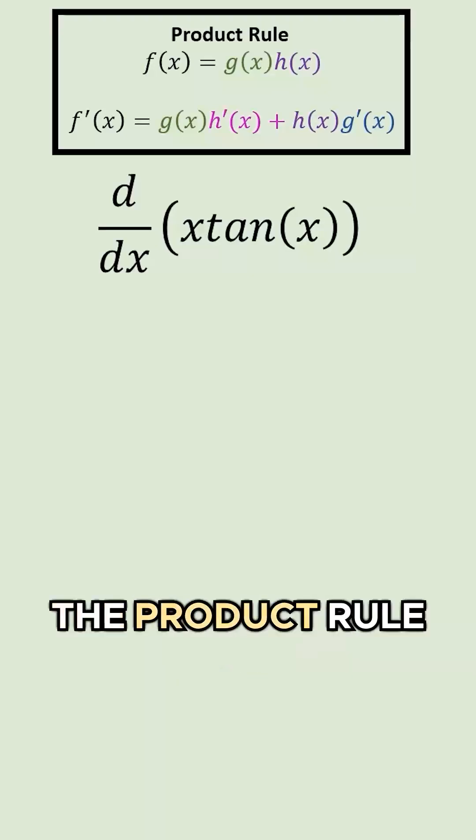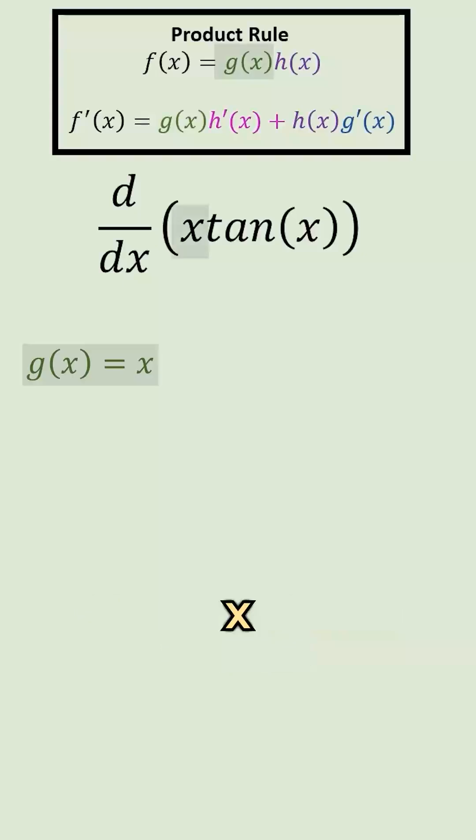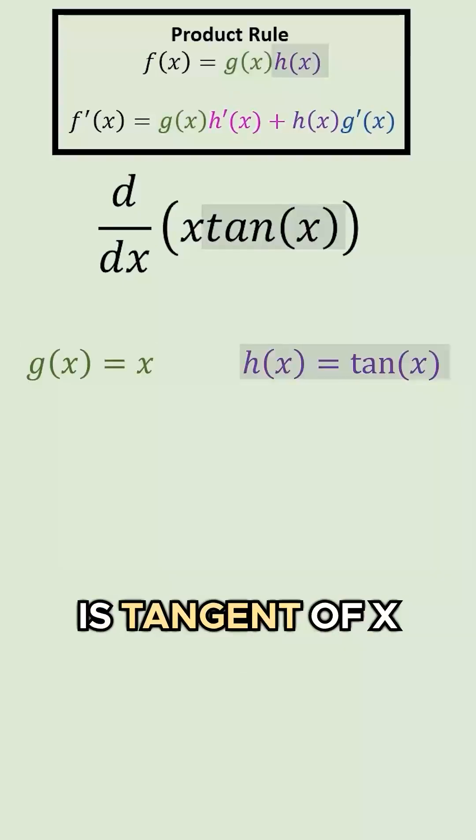So, in order to use the product rule, we have to identify our two functions. And it looks like one of our functions here is x, and the other function here is tangent of x.